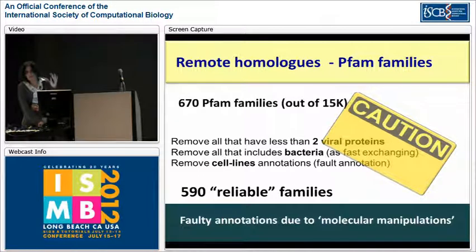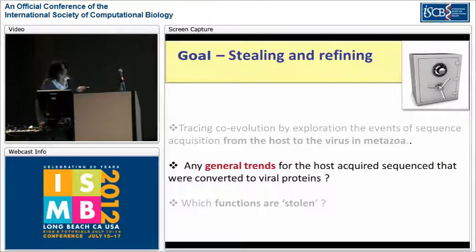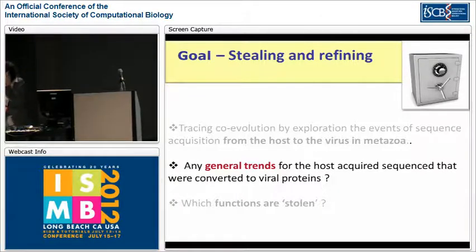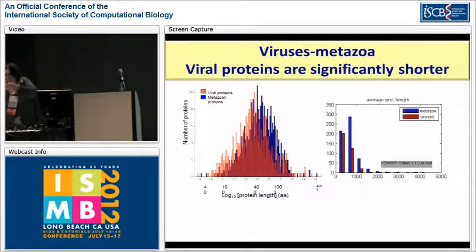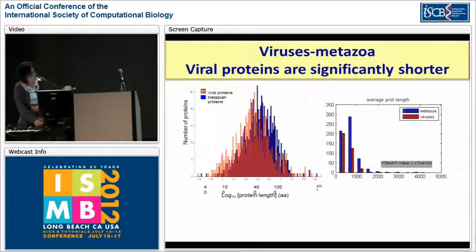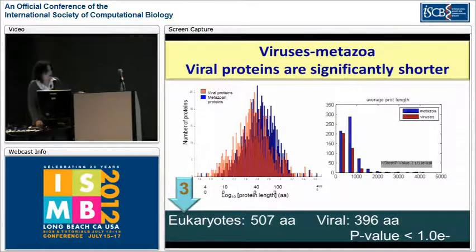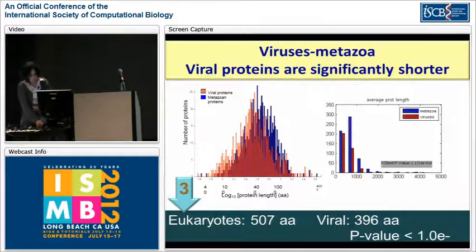The second aspect we wanted to understand is what can we learn that we didn't know before - what did this stealing and hijacking tell us? We first took the intuitive measure of protein size. Showing an overlay of viral proteins in red and host proteins within the same PFAM family in blue, you can see they overlap but are not the same distribution. Eukaryotes are on average 500 amino acids, while viral proteins are less than 400 amino acids. The viral proteins are significantly shorter, with a p-value of e to the minus 17.